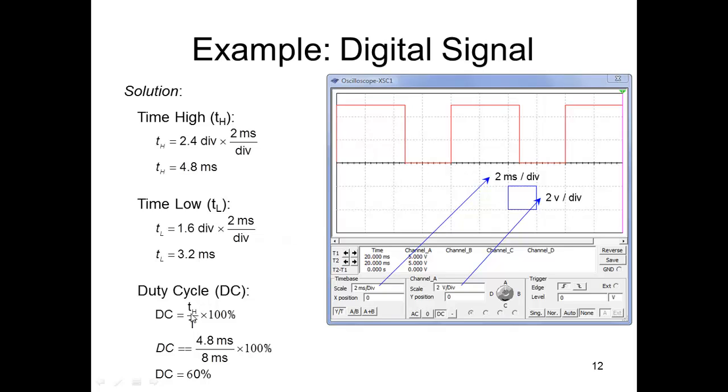Alright, duty cycle then would be the time high, 4.8 divided by 8 milliseconds times 100. So it's going to be 60 percent, alright, for the duty cycle.